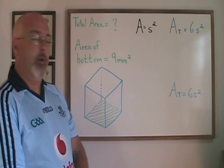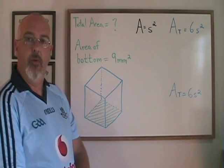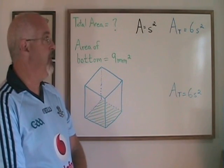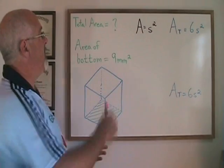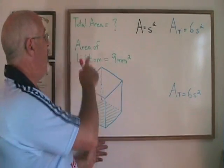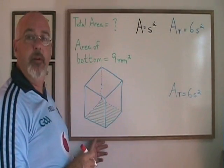One way that I can try to make a question involving the use of this formula a little more tricky is to impose an extra step or two. If I am asking for the total area of this cube but instead of giving a side length I give the area of the bottom which is 9 millimeters squared.